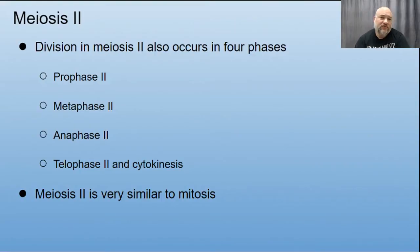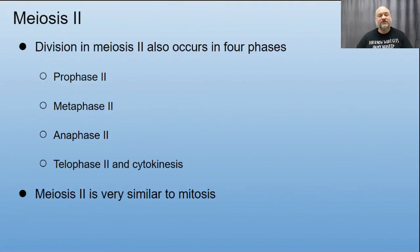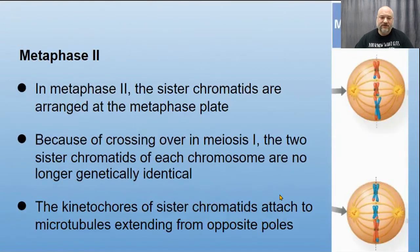Now let's go into meiosis II, which the video just previewed. It has the same phase names but called 'two': prophase II, metaphase II, anaphase II, telophase II, and cytokinesis. It's very similar to mitosis — we are splitting chromatids again, just as we did in mitosis.